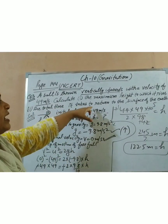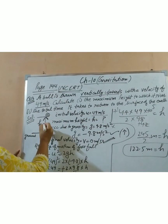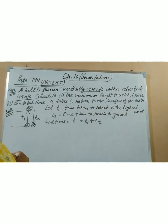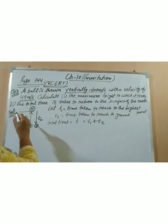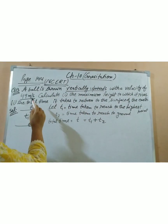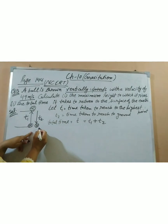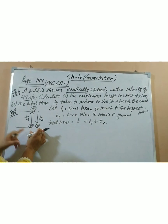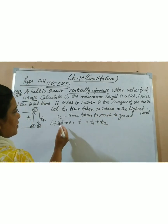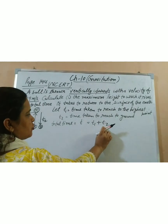Now let's do the second part: total time to return to the ground. You throw the ball up, it takes time t1 to reach the top, then comes back down. Let t1 be the time taken to reach the top and t2 be the time taken to return to the ground. Therefore, total time T equals t1 plus t2.